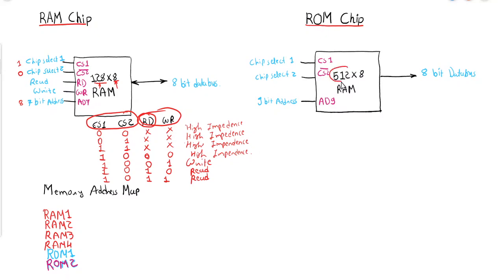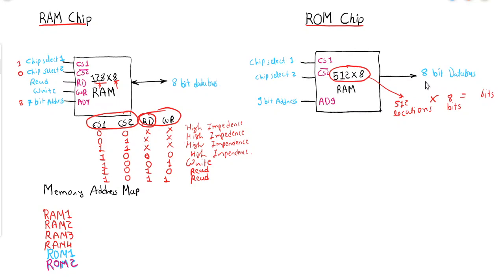Now if we discuss the ROM chip, the size here is 512×8, meaning we have 512 locations and on each location we are storing 8 bits. To calculate the total size: 512 × 8 gives the total number of bits stored inside the ROM.